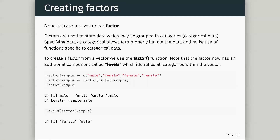A special case of a vector is a factor — and this is something really cool about R. Python has worked hard to copy this using the pandas library. Factors are used to store data which may be grouped into categories. By specifying data as categorical — saying it's a factor — R handles this data slightly differently. Certain functions will operate differently, and factors are actually important for things like plotting.